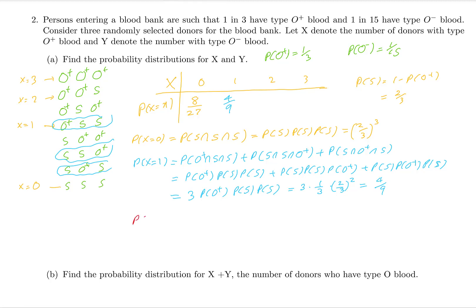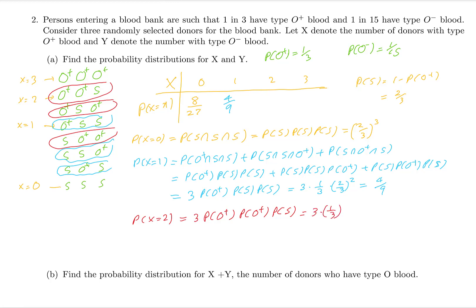For X equals 2, there are three arrangements with two O plus donors. Following the same process: P(X=2) equals 3 times (1/3)^2 times (2/3), which equals 2 over 9. And P(X=3) equals (1/3)^3 equals 1 over 27. That completes the probability distribution for X.